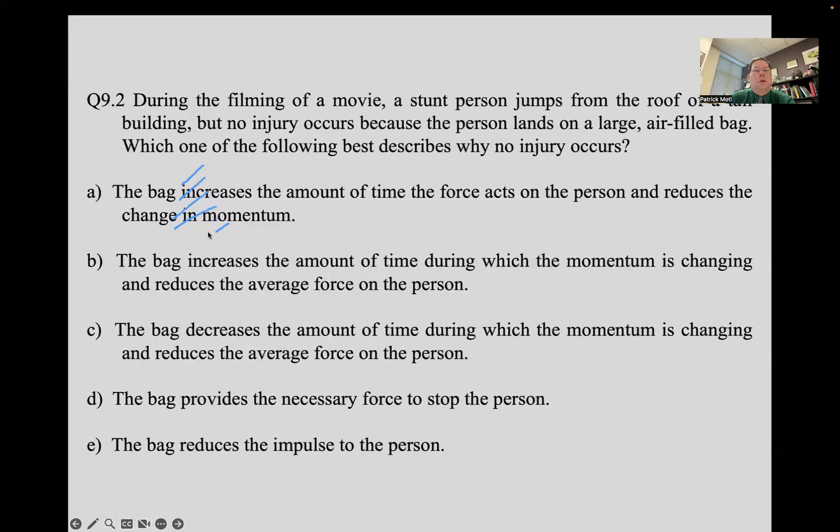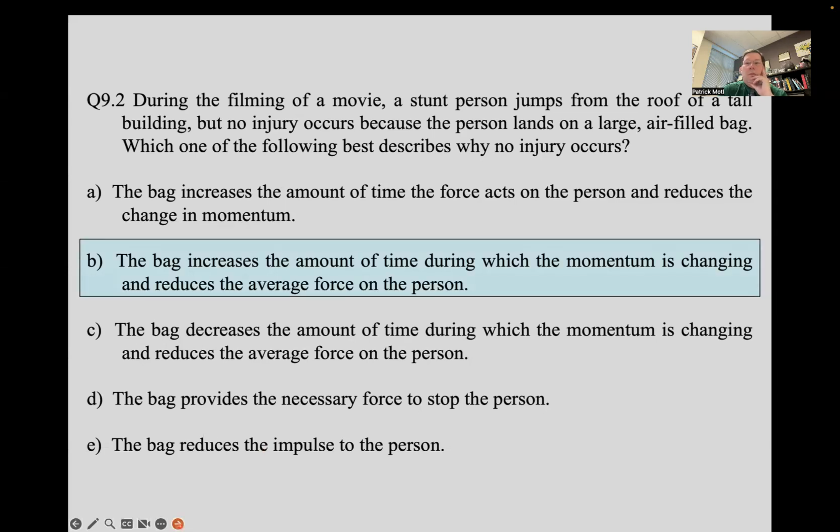All right, let's clean up a bit. And let's try some questions. So during the filming of a movie, a stunt person jumps from the roof of a tall building, but there's no injury because a person lands on a large air-filled bag. Which one of the following best describes why no injury occurs? So read through those possibilities. Think which one is correct, given what we know about impulse and momentum. And then if you've talked it over with your physics friend, let us join back up.